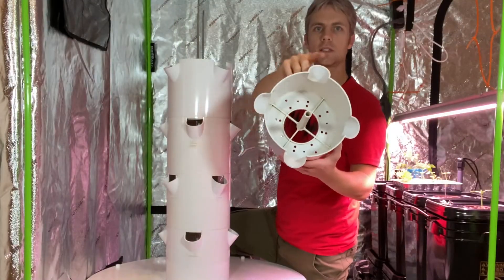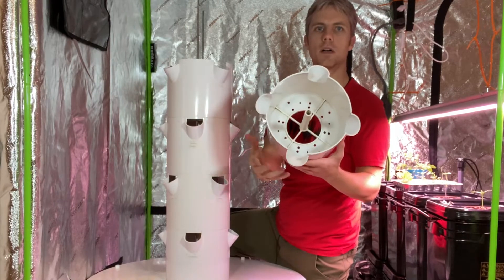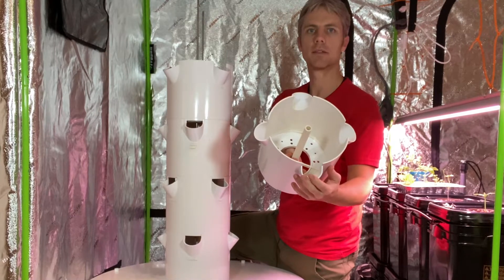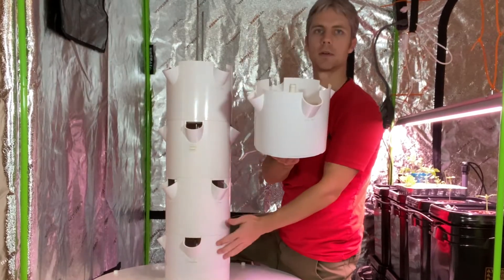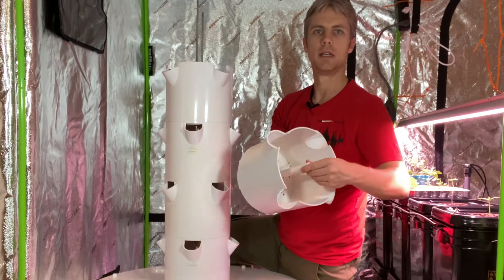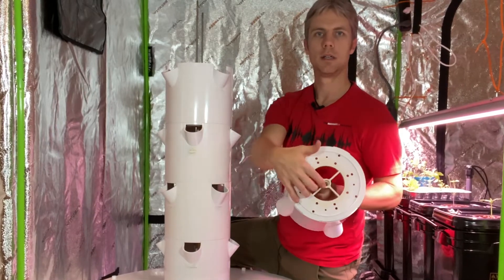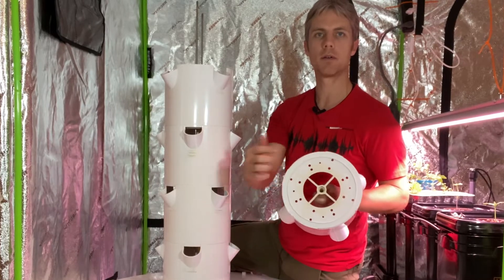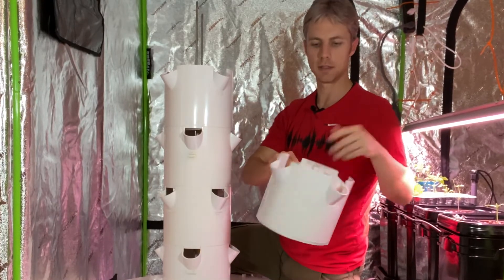Each one of these sections here has four growing pods on it and the net cups will rest in there, allowing four plants to grow in each section, times my five sections is 20 plants in total. It has the built-in centerpiece here and the water comes up through the tower, through the center and gets delivered to the top.